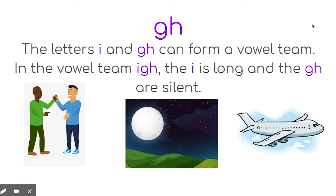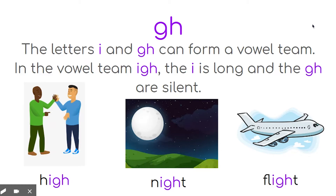The letters I and G-H can form a vowel team. In the vowel team I-G-H, the I is long and the G-H are silent. The word high starts with H and is followed by the vowel team I-G-H. How might you spell night? You got it — N-I-G-H-T. And finally, what about flight? Yes, flight is spelled F-L-I-G-H-T.